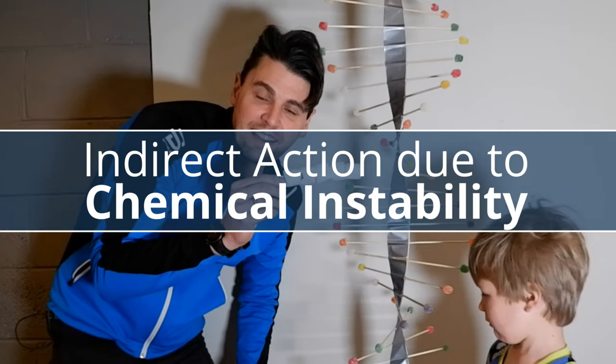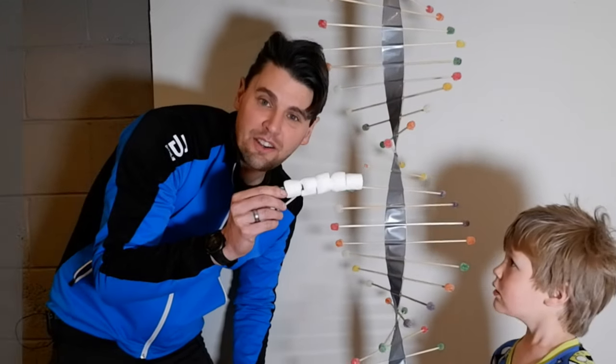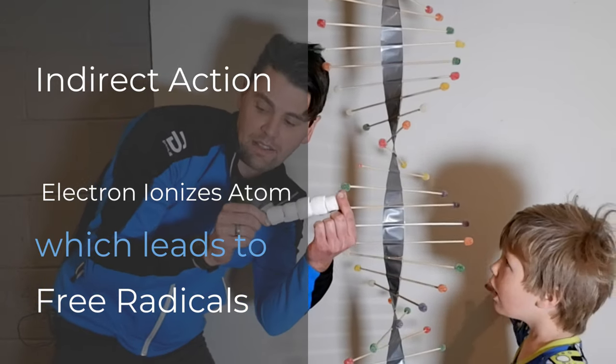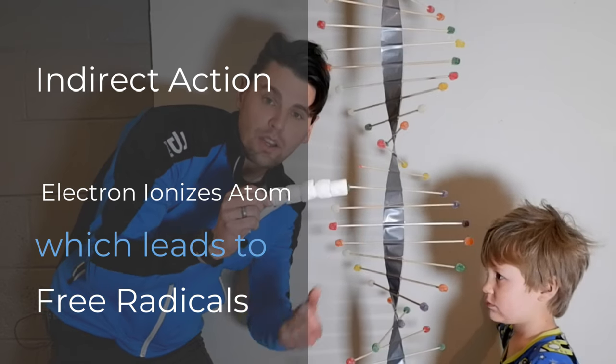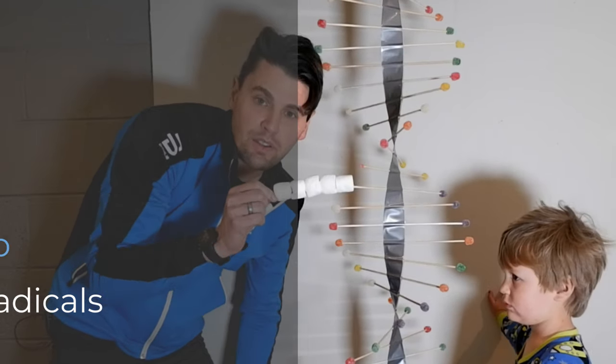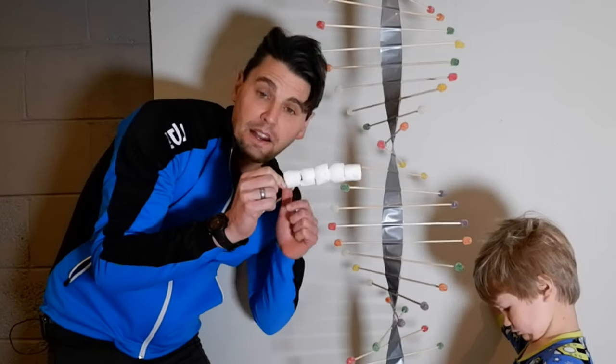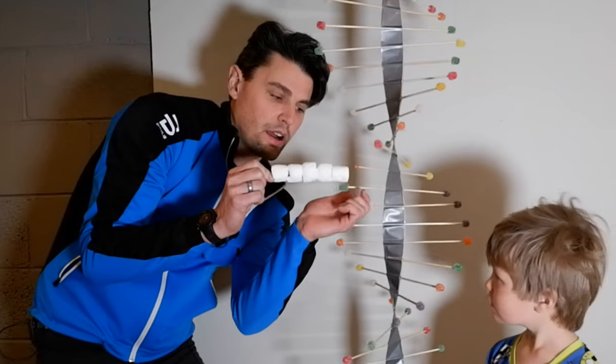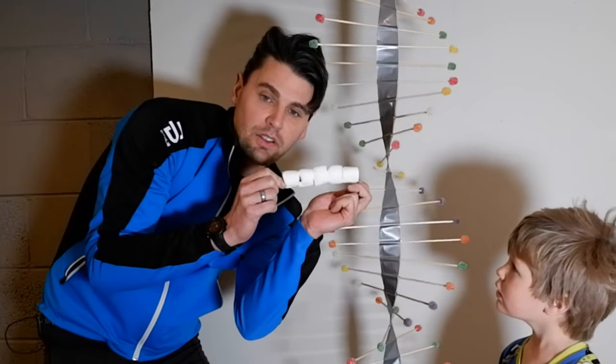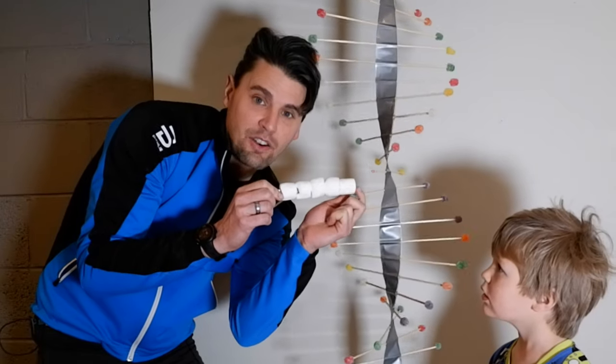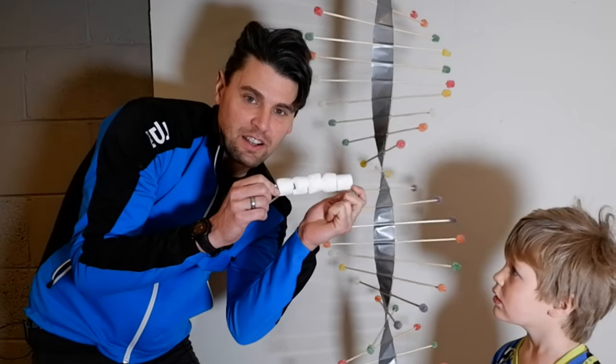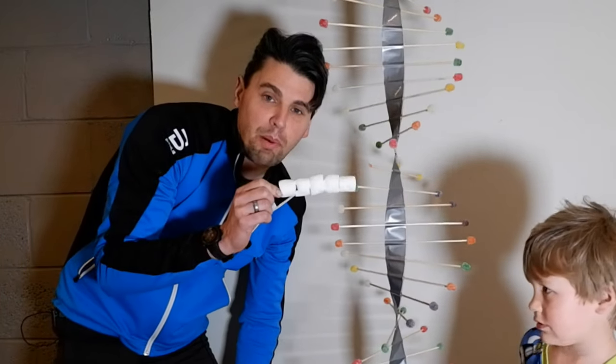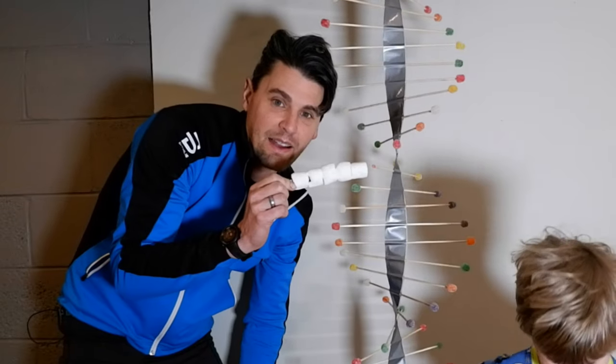The other option is that we have what's called indirect action wherein the electron interacts with the molecules around it and creates what's called free radicals. Those free radicals could then also knock out a base pair here and if the free radical knocks out the base pair that's what's called indirect interaction. So indirect is actually more frequent than direct but those are both possible ways that the DNA can be damaged.